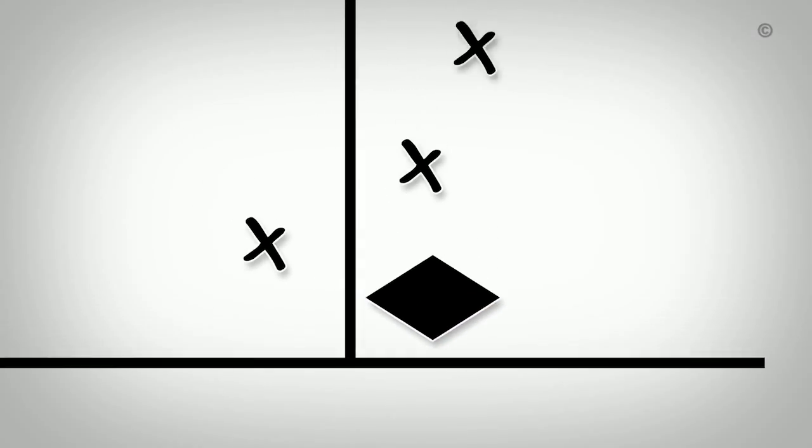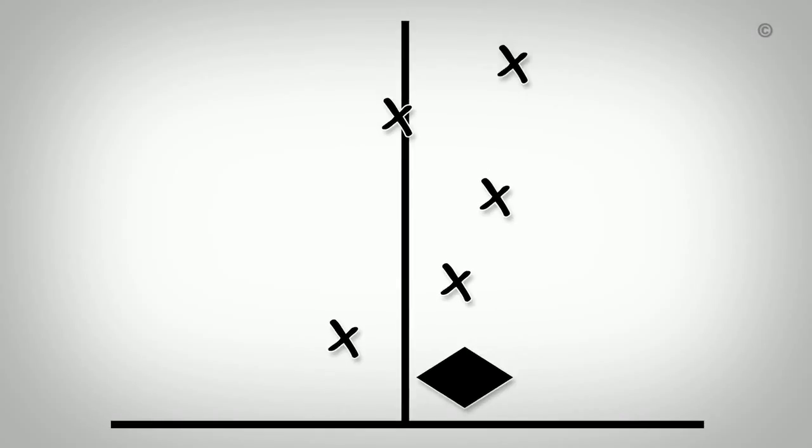Based on where the diamond is situated on the forest plot, and seeing how far from the line of no difference it lies, we can determine whether those exposed to an intervention were better off than those not exposed, and by how much.